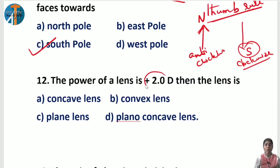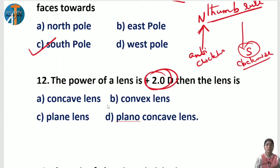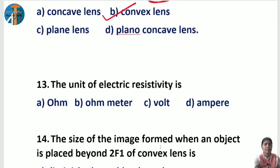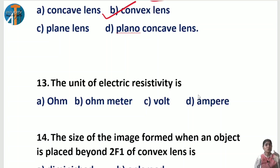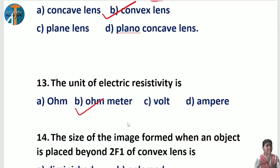Next: the power of a lens is +2D — what type of lens is it? If power is positive, it is a convex lens; if power is negative, it is a concave lens. Here power is positive, so it is a convex lens. Following that: the SI unit of electric resistivity — one question on SI units is definitely expected. The SI unit of electric resistivity is ohm-meter. Note: resistance is ohm, but resistivity is ohm-meter.